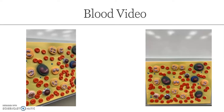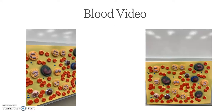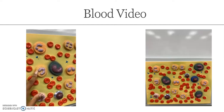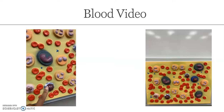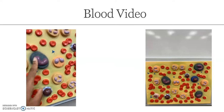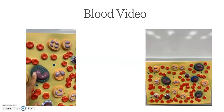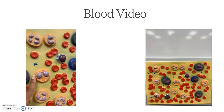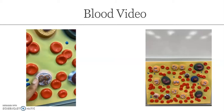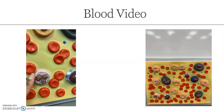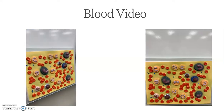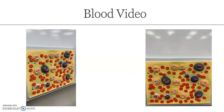To remember them in order, use the mnemonic: 'Never Let Monkeys Eat Bananas' — Never for neutrophils, Let for lymphocytes, Monkeys for monocytes, Eat for eosinophils, Bananas for basophils. And those are the formed elements found within your blood.